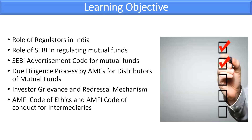Now we will be discussing Chapter 4, that is Legal and Regulatory Framework. Watch this video till the very end to get MCQs with correct answers. The learning objectives include: role of regulators in India, role of SEBI in regulating mutual funds, SEBI advertisement code for mutual funds, due diligence process by AMC for distributors, investor grievance and redressal mechanism, and AMFI code of ethics and code of conduct for intermediaries.